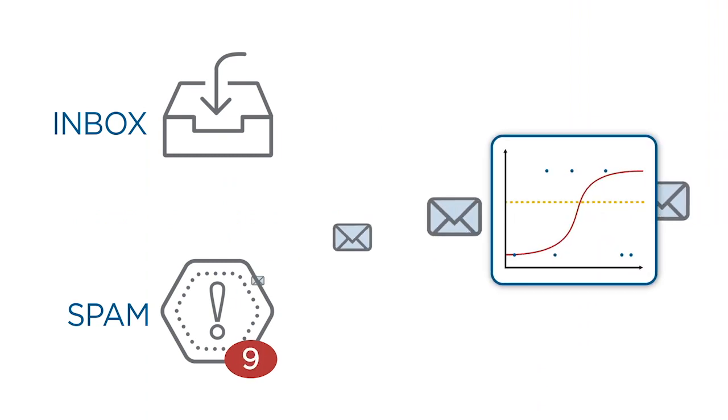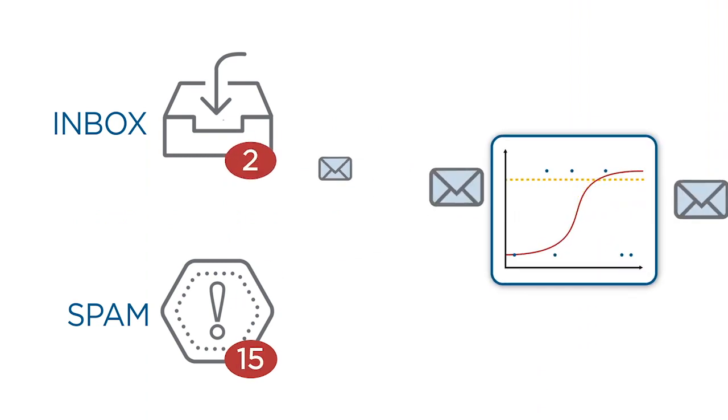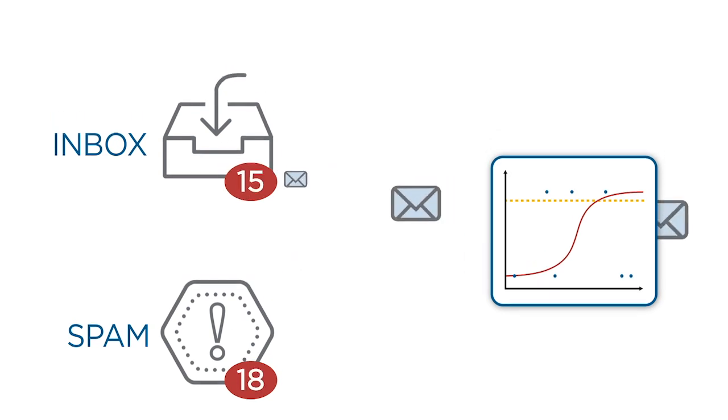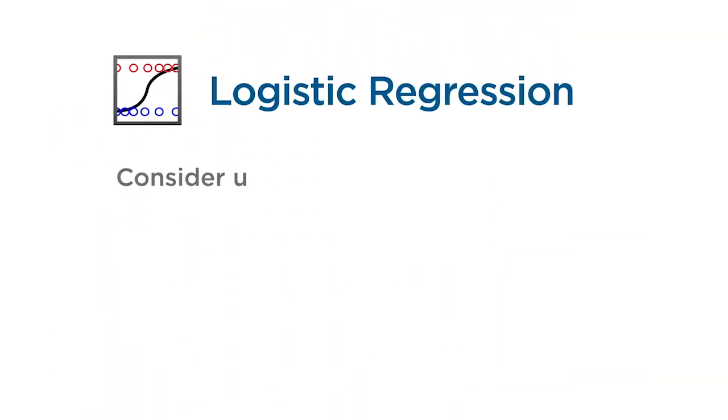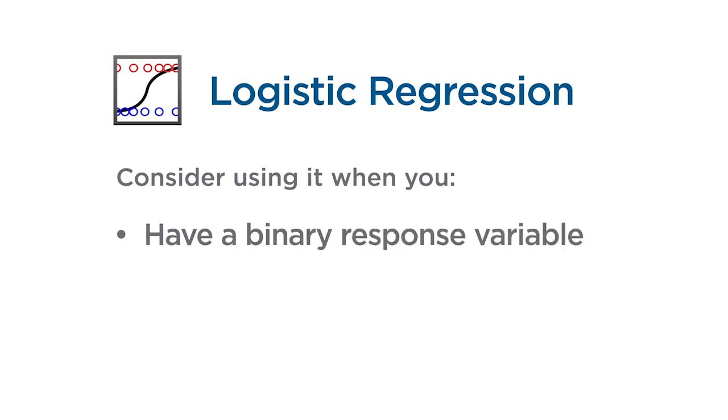For example, you might set a high threshold to classify spam so that you don't filter out important emails. You should consider logistic regression any time you have a binary response variable. That's what this model is uniquely built for.